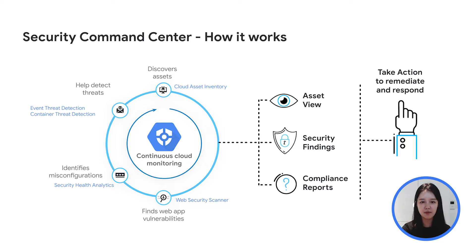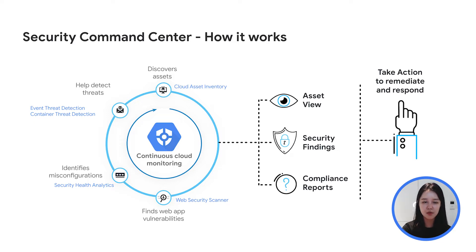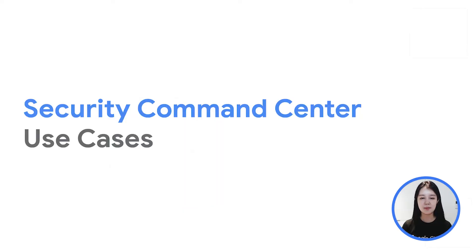SCC gives you a prioritized security findings view that helps you address potential security issues. Another capability within SCC is a compliance view, which enables you to view and know where you stand by correlating all tracked misconfigurations and vulnerabilities to industry standards like CIS, PCI DSS, NIST 853, and ISO 27001. It also provides compliance reporting segmented by these standards. SCC provides recommendations and remediation steps for you to take action on security findings and compliance violations. You can also send the findings to a SOAR or SIEM platform for you to remediate and respond.